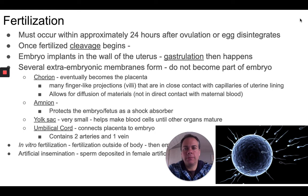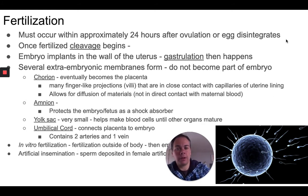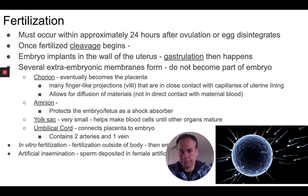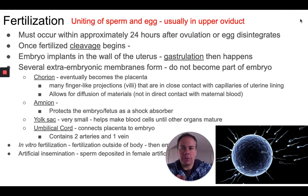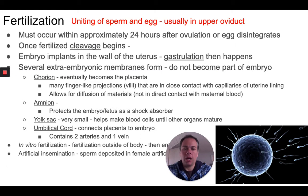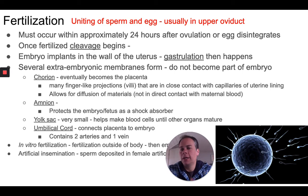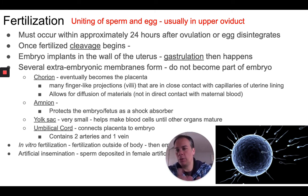If a woman has ovulated and has sex around the time of ovulation, sperm cells can travel from the vagina through the cervix into the uterus and eventually into the oviduct where they can reach the egg in the upper oviduct. Only a single sperm cell can actually penetrate and contribute its chromosomes to the zygote. As soon as a single sperm cell penetrates the egg, the outer layer immediately changes to become impermeable to other sperm cells — this prevents multiple sperm from fertilizing a single egg, which would cause problems with chromosome numbers.